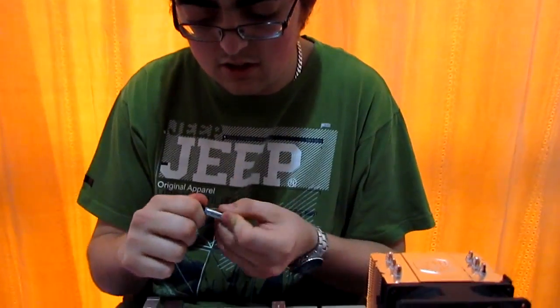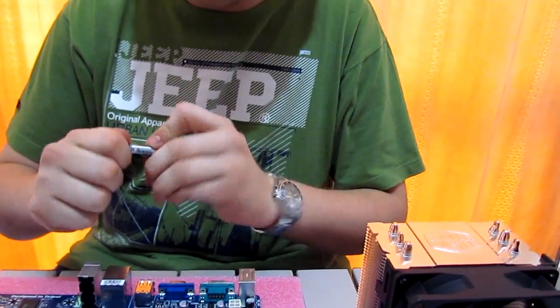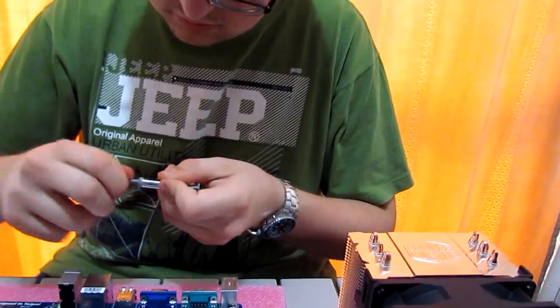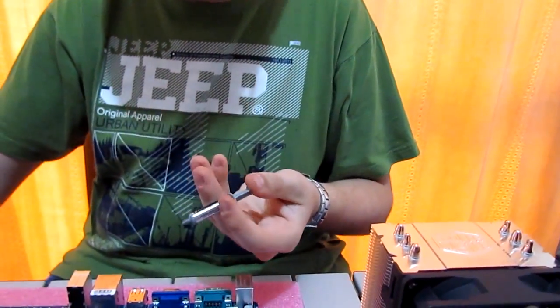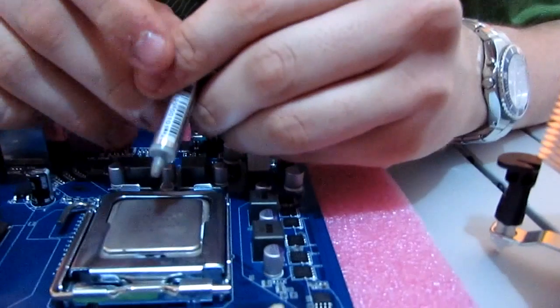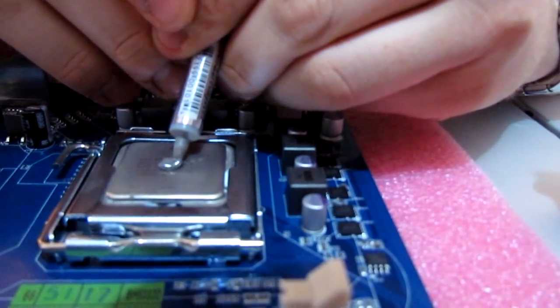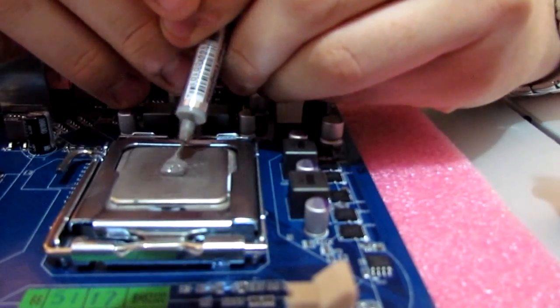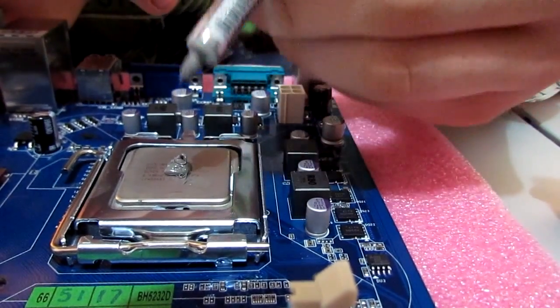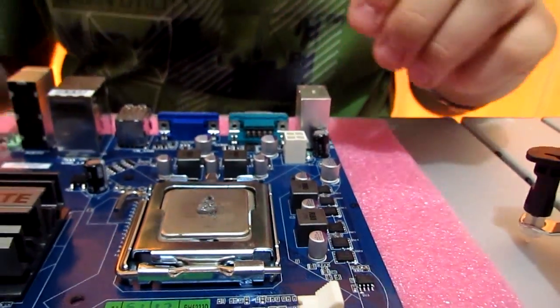So we're actually going to open up. We've got our Arctic Silver 5 paste. Just going to take the cap off the top. And all we're going to do is just like a syringe, just push down and it'll go in the middle. So we're going to just do that now. You don't need much. Just about a pea size. That should do it. Then you'd put the cap back on that.